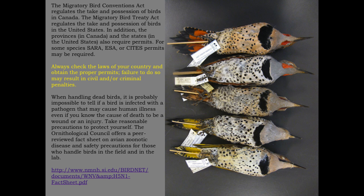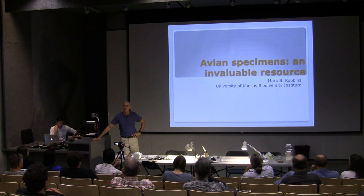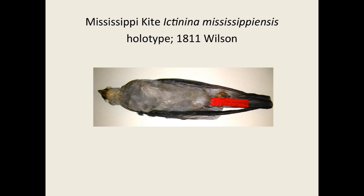Study scans have been critical to this whole process from the very beginning when Linnaeus was using binomial protocol to name, describe, and categorize specimens. Alexander Wilson used this specimen to describe Mississippi kites, so this is a holotype. This specimen is at the Academy of Natural Sciences in Philadelphia.